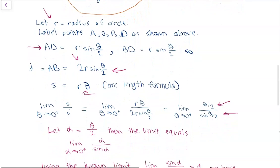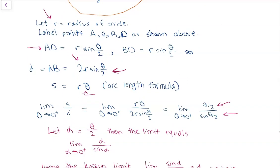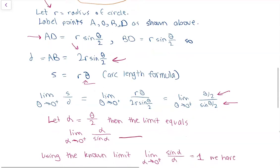Now we can make the substitution of alpha being equal to theta over 2. And now we get the limit of alpha going to zero plus of alpha divided by sine alpha.